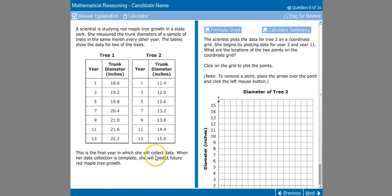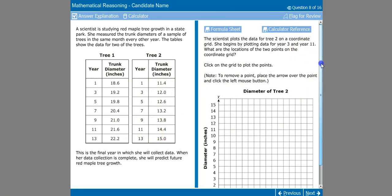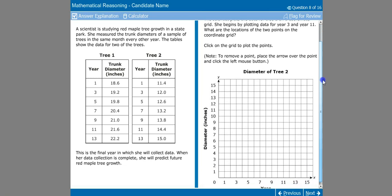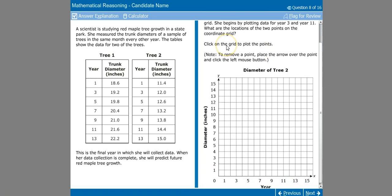This is the final year in which she will collect data. When her data collection is complete, she will predict future red maple tree growth. So this is a three part question. The scientist plots the data for tree two on a coordinate grid. She begins by plotting the data for year three and also year 11. What are the locations of the two points on the coordinate grid? They're directing us to click on the grid to plot the points.